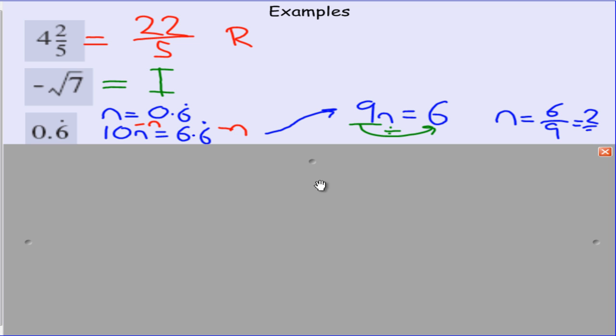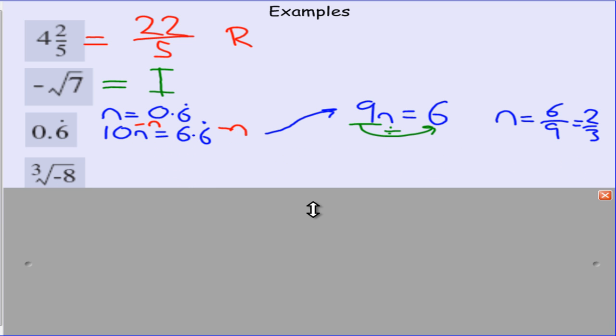which we can simplify to 2 over 3 as a matter of consistency. And that's one whole number over another. So that is a rational number.